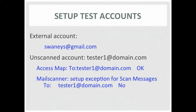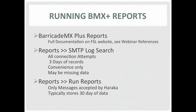Just use the BMX Plus web interface to set up an access map to add a key like tester-one as your tester address. A slightly unusual name is a good idea because this is an unfiltered account. We use support at FSL.com as our unfiltered account, and as a result we have to manually throw away a lot of junk every day. The second trick is to set up an exception for scanned messages so the tester-one at domain.com won't get scanned. We'll also use the report functions built into the Barricade MX Plus web interface for our analysis.